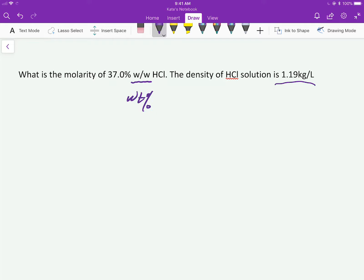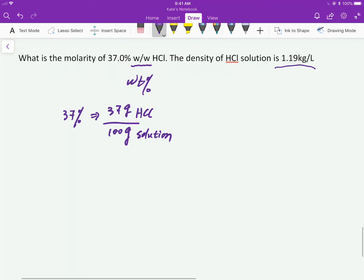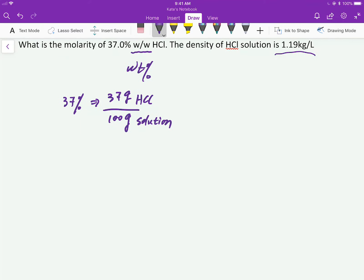So what it means is that 37% hydrochloric acid is 37 grams in 100 grams solution. That's what it means. So given the weight percent, we have to convert that to molarity.